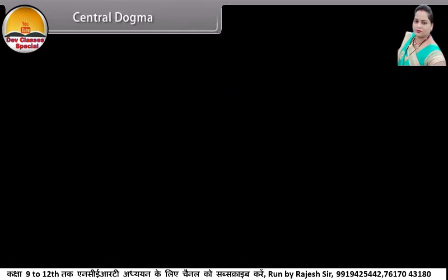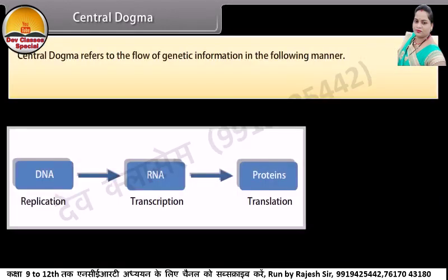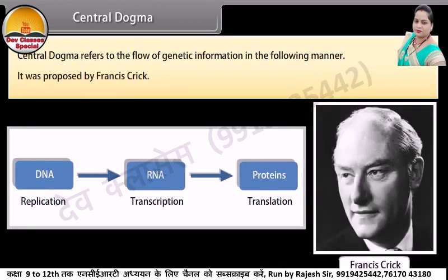Central dogma refers to the flow of genetic information in the following manner. It was proposed by Francis Crick.